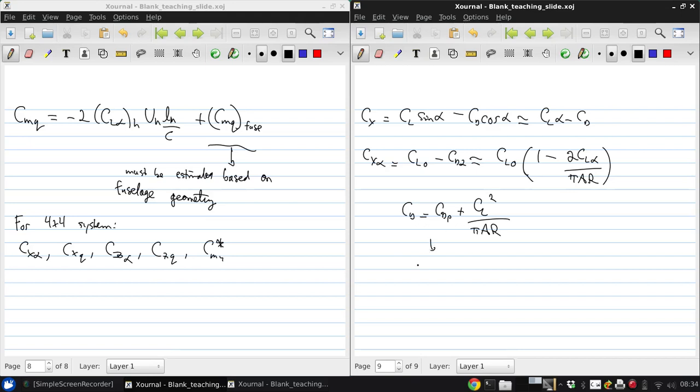And using this, then we would get that Cdα is 2 Cl0 Clα over πAR, which is what was used to get this. So, this is similar to what we did in class in lecture 16, but actually slightly simplified even from that approach.